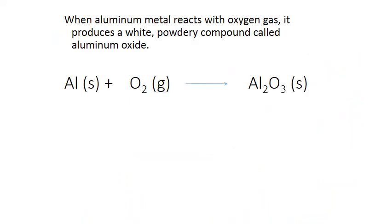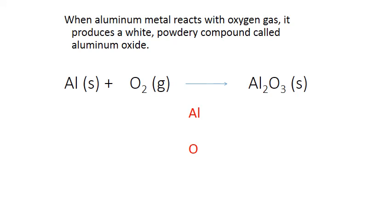Here's our next example. When aluminum metal reacts with oxygen gas, it produces a white powdery compound called aluminum oxide. Aluminum and oxygen are our reactants written on the left; aluminum oxide is the product written on the right. We start with an atom inventory. Our two elements are aluminum and oxygen. On the left-hand side we have one aluminum and two oxygens. On the right-hand side we have two aluminums and three oxygens in that formula.